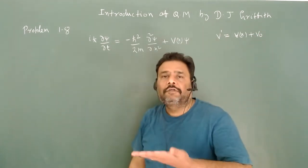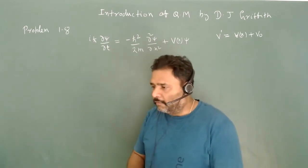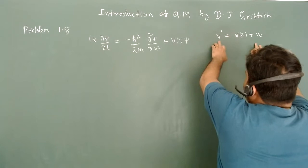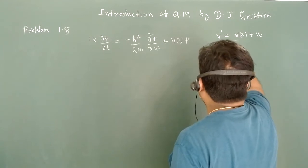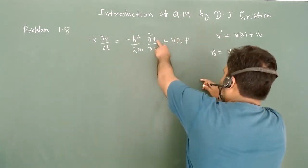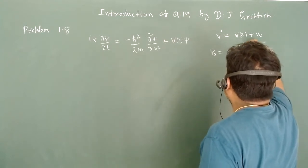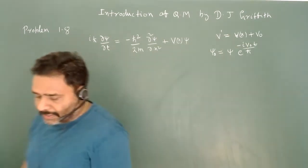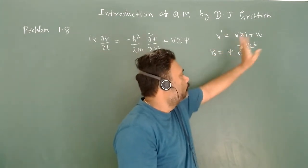When we add a constant potential in classical mechanics, Newton's law does not change. But here, what we have to prove is: when we have the new potential V', the new wave function ψ' is equivalent to ψ — the wave function related to potential V(x) — multiplied by e^(−iV₀t/ℏ). This is the solution for potential V' = V(x) + V₀.